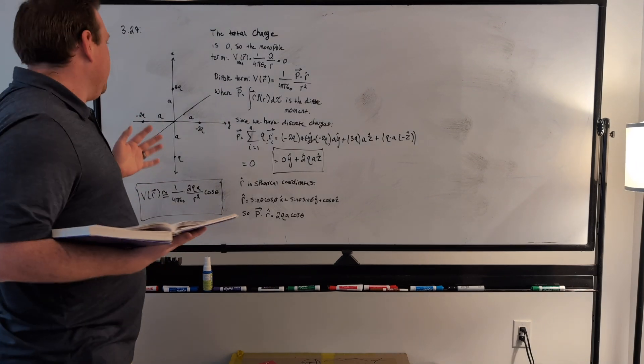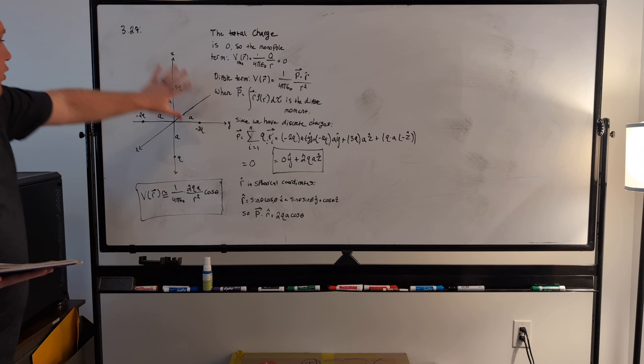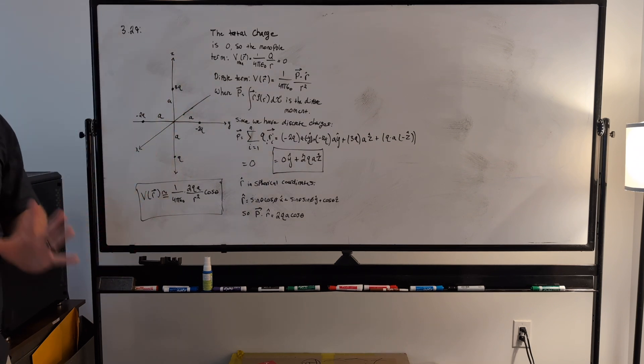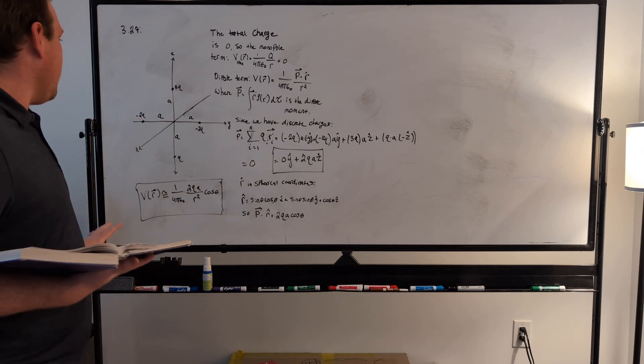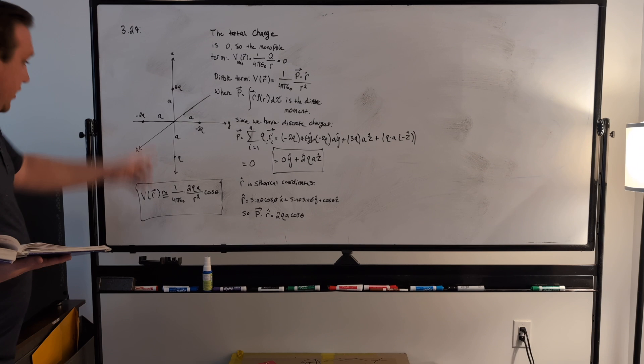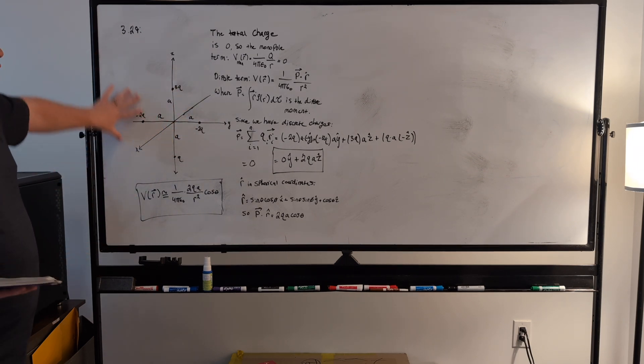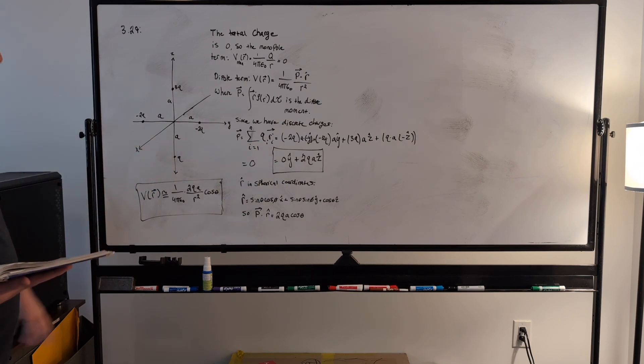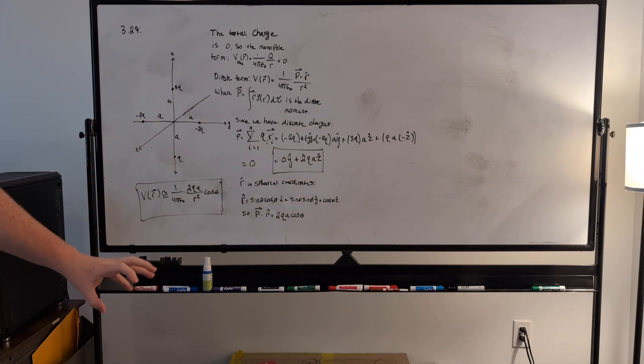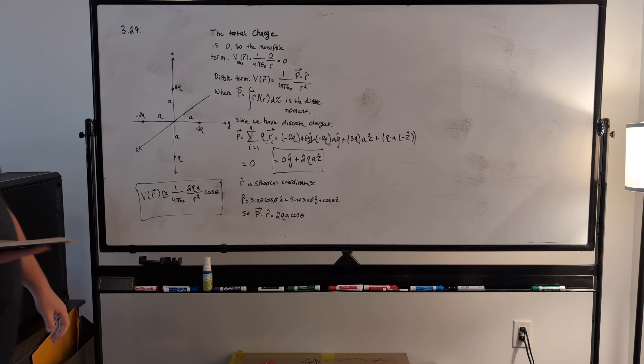So the monopole term, we have a discrete set of charges here, so we don't have a volume of charge like we've been dealing with in previous problems, we just have discrete sets of charges. We can easily add up what the total charge of this configuration is. If you were from very far away to look at this charge configuration...